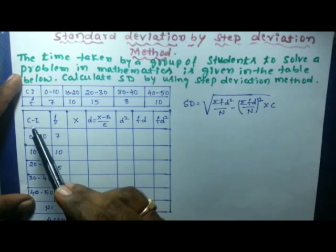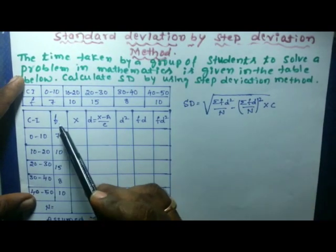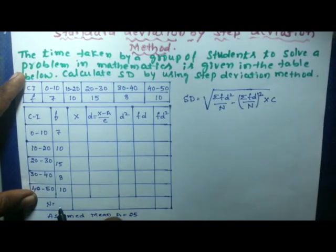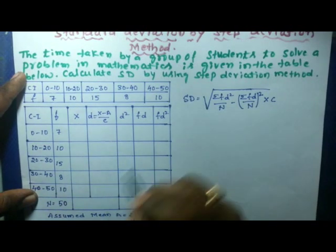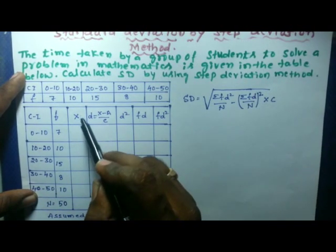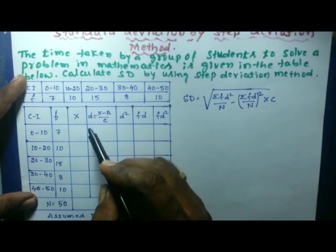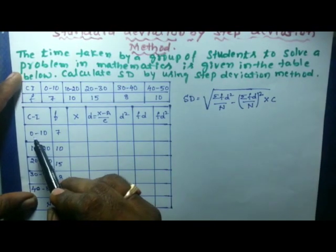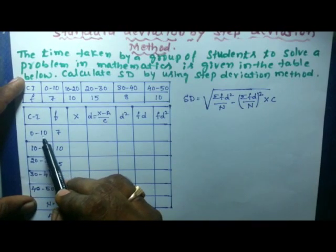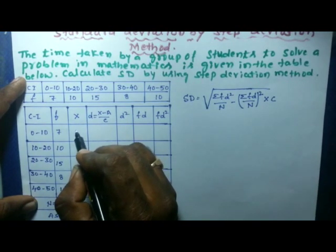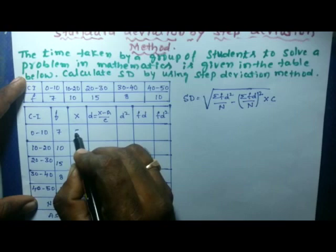The class intervals and frequencies are given. Adding all the frequencies gives n = 50. Next, find x, the midpoint of each class. For the interval 0–10: (0+10)/2 = 5, so x = 5.